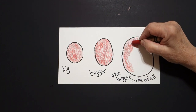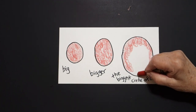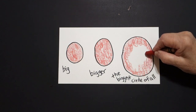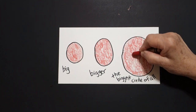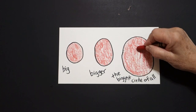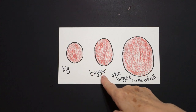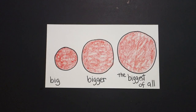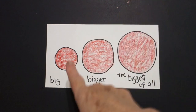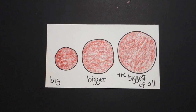Now I'm doing circles, but the same thing can happen with any kind of object that describes a noun. These are called superlative adjectives. We'll do more than just this one. But one big circle, another bigger circle, finally the biggest circle of all. Here are my big circle, my bigger circle, and my biggest circle of all.